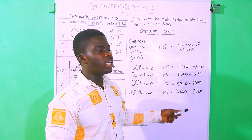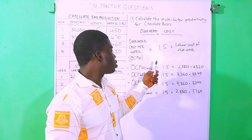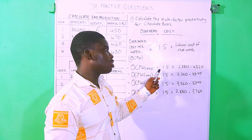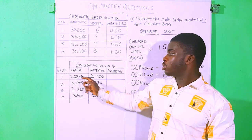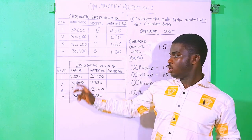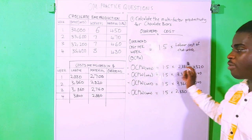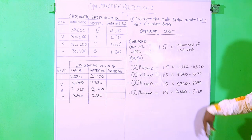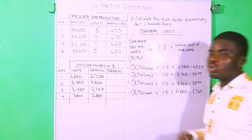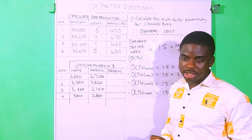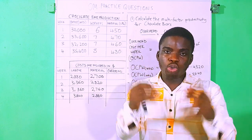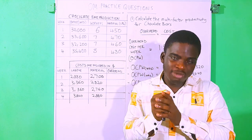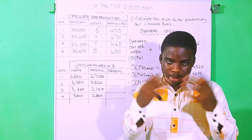As demonstrated, the overhead cost per week for week one equals 1.5 times the labor cost of week one. That's all we've done here, and these are the answers. Now we put them into the table and substitute them into the MFP equation — the multi-factor productivity equation — in order to get the multi-factor productivity.